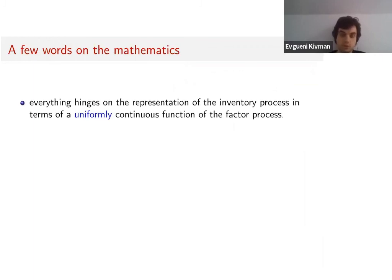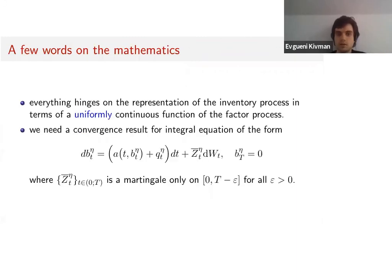A few words on the mathematics. Everything hinges on the representation of the inventory process in terms of a uniformly continuous function of the factor process. So this regularity property dominates all the mathematical considerations. This is really important—this is where we had this restriction on bounded diffusion coefficients.